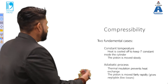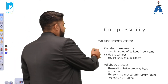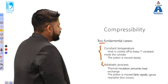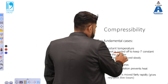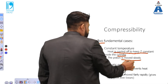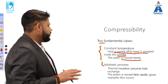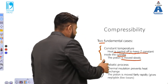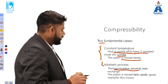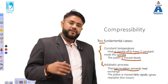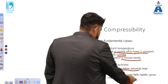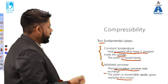What is compressibility, and what are the two different cases? There are two fundamental cases: constant temperature and the adiabatic process. In the constant temperature process, heat is supplied to keep the temperature constant inside the cylinder while the piston moves slowly. In the adiabatic process, thermal insulation inside the cylinder allows no heat exchange, so the piston moves rapidly with negligible flow losses.